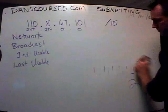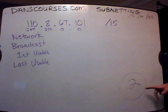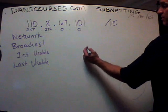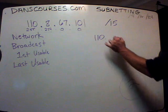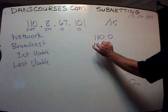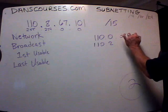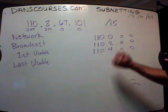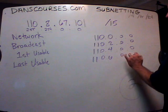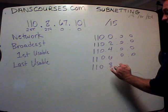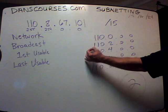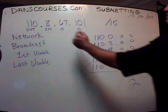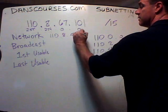Since the magic number is 2, the networks go up by 2 in the octet of interest, which in this case is the second octet. So you've got 110.0.0.0 as the first network, 110.2.0.0 as the second, 110.4.0.0 as the third, and so on. Counting up, 110.8.0.0 is the fifth network, so the network address is 110.8.0.0.